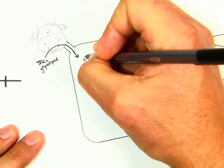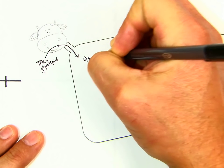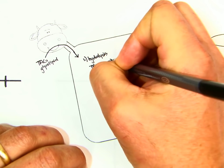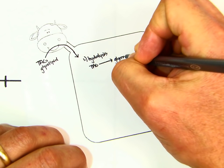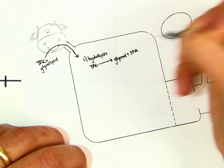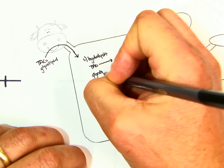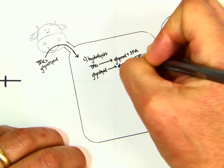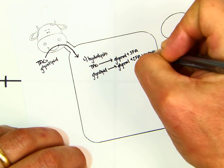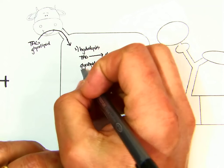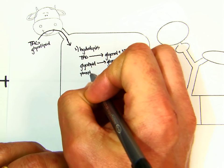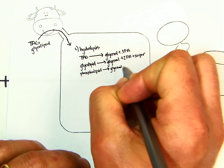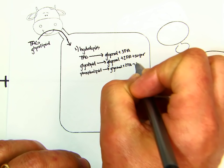We're going to have three processes that take place in the rumen, the first being hydrolysis. We're going to take TAG and hydrolyze it into glycerol plus three fatty acids. We're going to take glycolipid, hydrolyzed into glycerol plus two fatty acids plus a sugar. And then we're going to take phospholipid and break it into glycerol, plus two fatty acids, plus the polar head group.